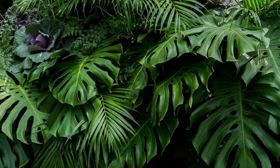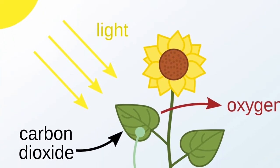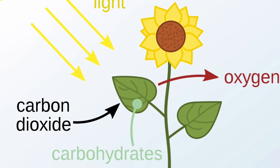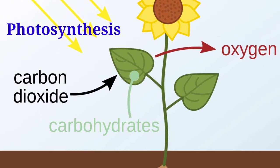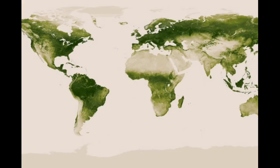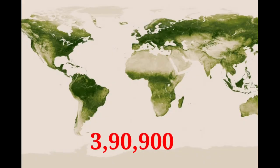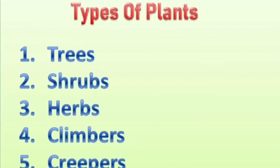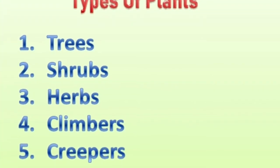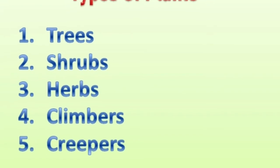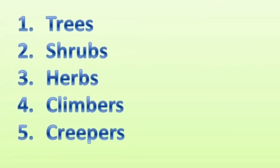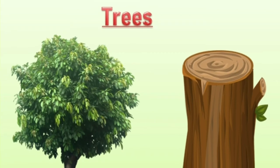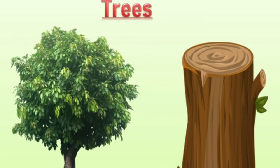Do you know what makes a plant a plant? Most plants make their own food through a process called photosynthesis. Scientists have estimated that there are almost 3,90,900 plants known to science. There are five types of plants: trees, shrubs, herbs, climbers and creepers.